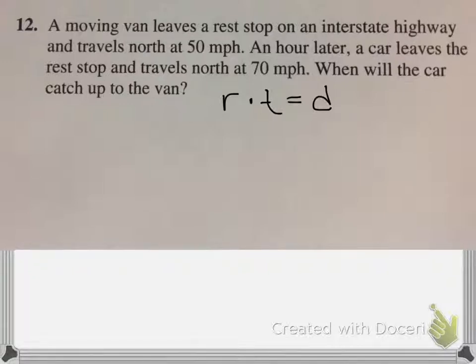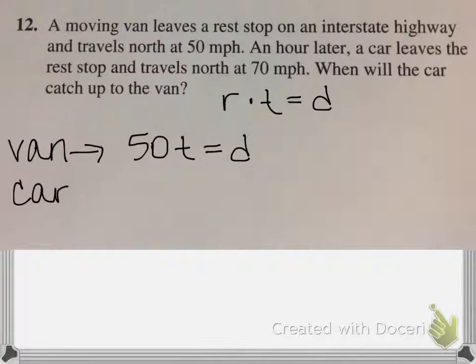So let's look at the van first. We're going to have the van, the rate is 50 miles an hour. We don't know how much time, so simply times t equals distance. My car is 70 miles an hour, an hour later. So the time from the van minus 1 would be an hour later.